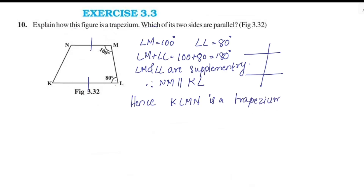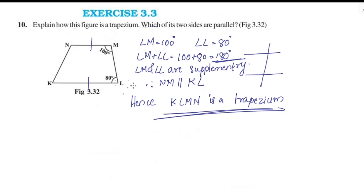Since NM is parallel to KL, and these are the only two parallel sides, we conclude that this figure is a trapezoid. The adjacent angles being supplementary confirms NM is parallel to KL.